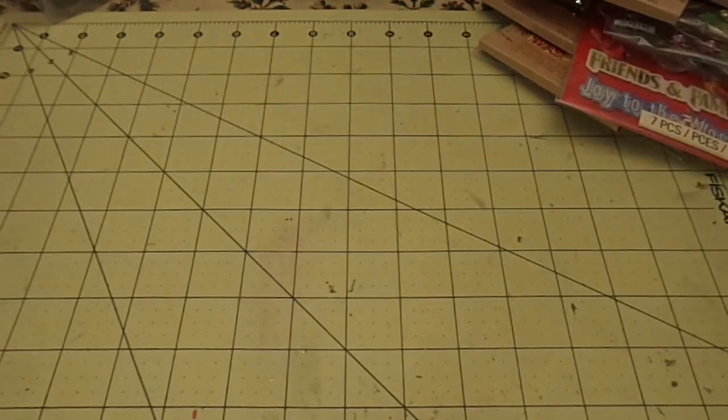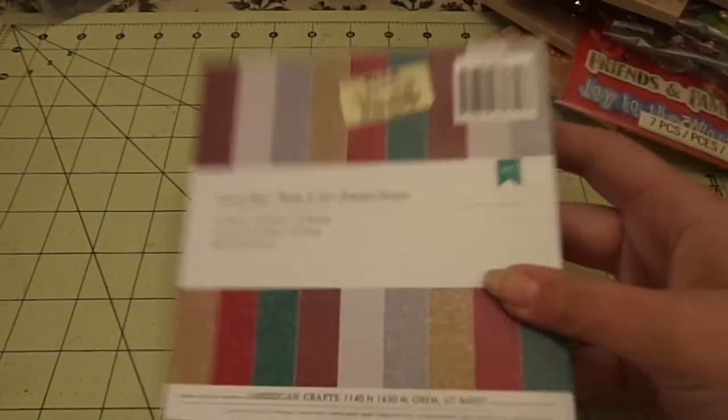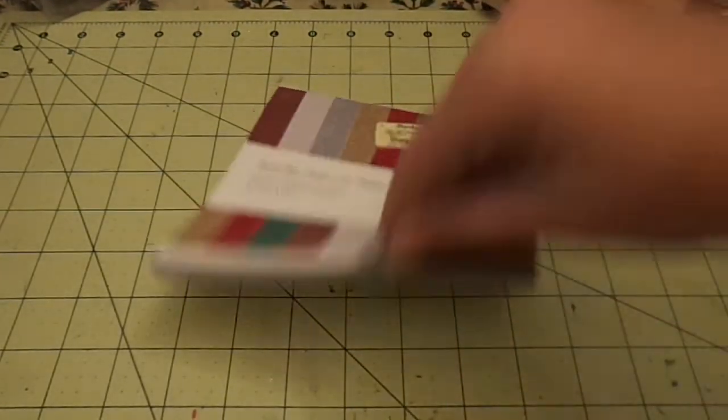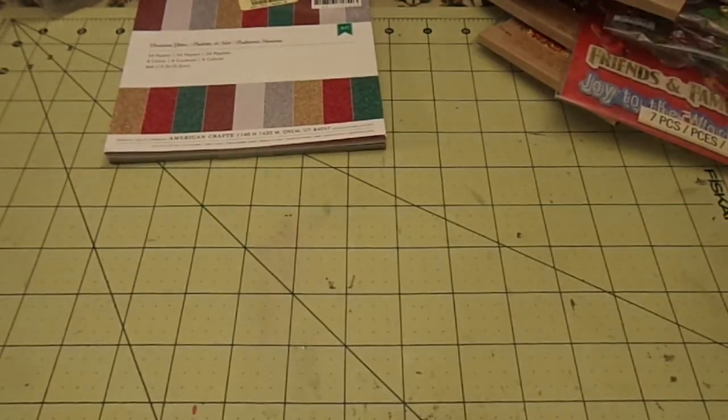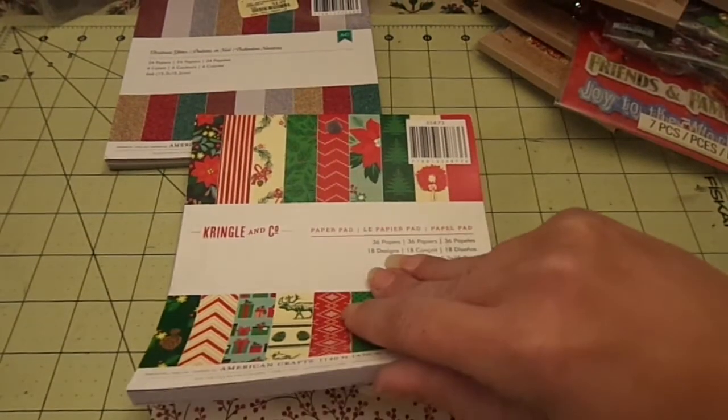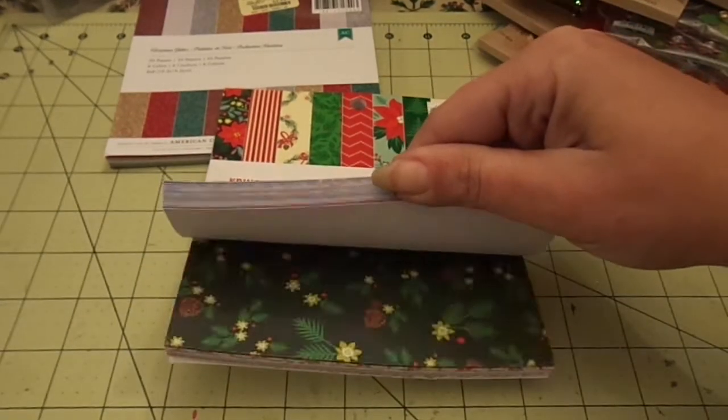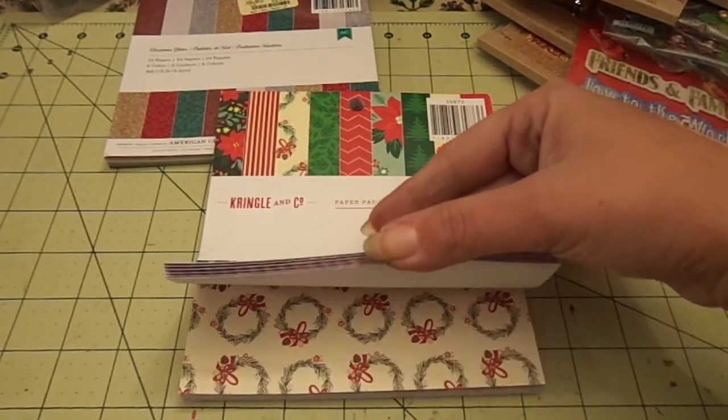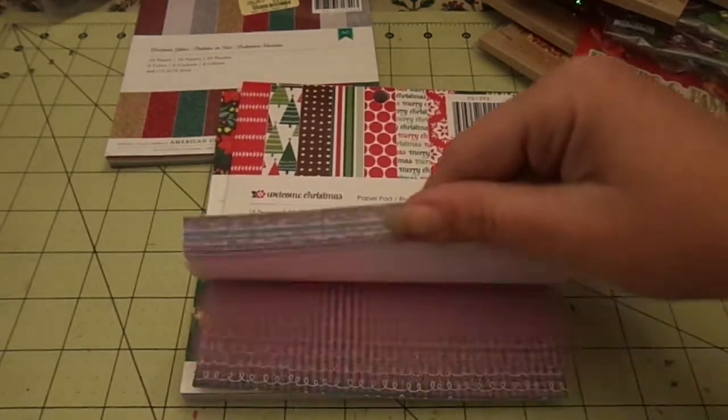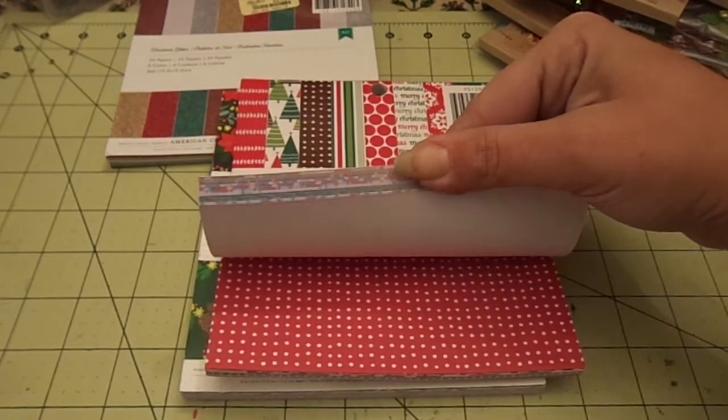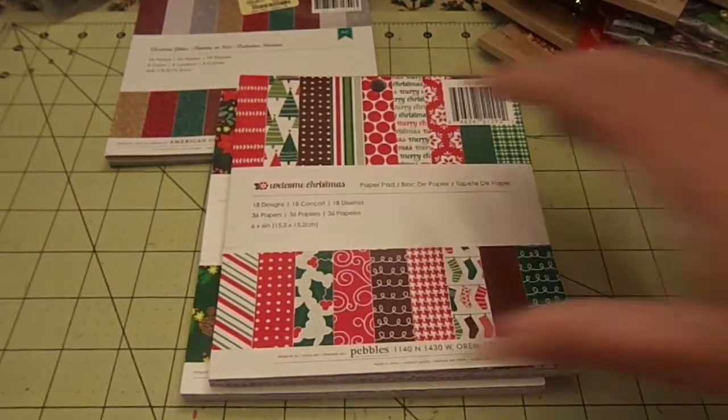Oh, avalanche happening. And then I grabbed the glitter paper from American Crafts for $2.99. Oh, it's closed. The Kringle and Company from American Crafts as well. And I know everyone's been showing these, so I'm not going to go through. And then the Welcome Christmas from Pebbles for $2.99 as well.